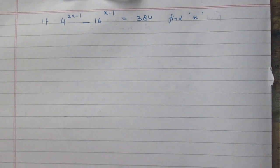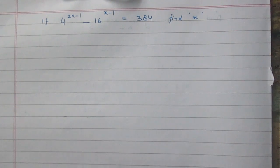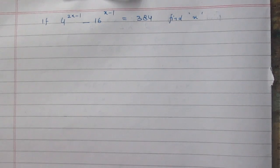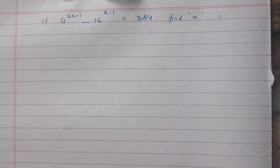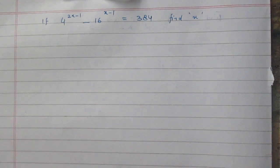If 4 raised to the power 2x minus 1, minus 16 raised to the power x minus 1, is equal to 384, find x.